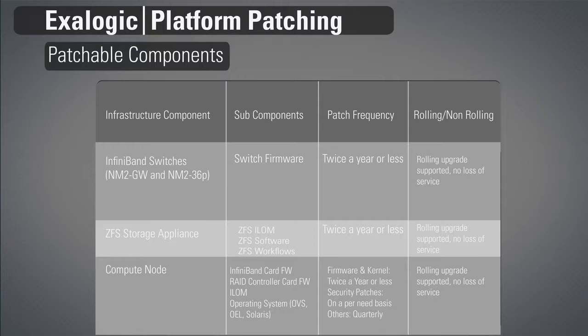For the compute node, it has the IB card firmware, the RAID controller firmware, and the OS — which can be OVS, OEL, or Solaris. For firmware and kernel, we ship twice a year. Security patches are on a per-need basis — if we hit a zero-day bug, we'll ship a security patch. Other software, tooling, and everything else is quarterly. All our patchable components can be patched rolling; we support both rolling and non-rolling depending on whether you want to take downtime.